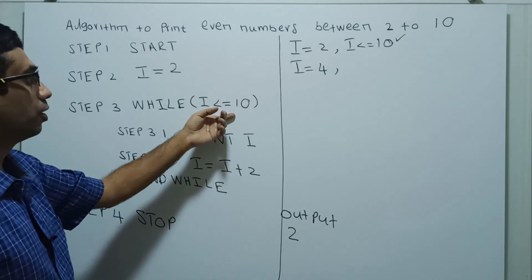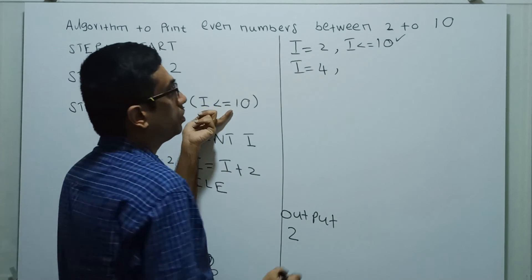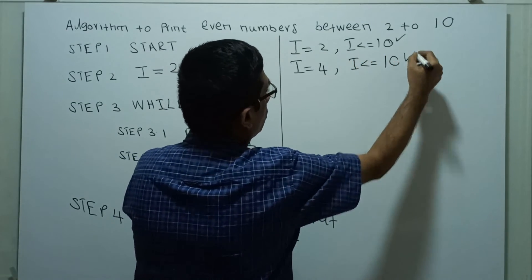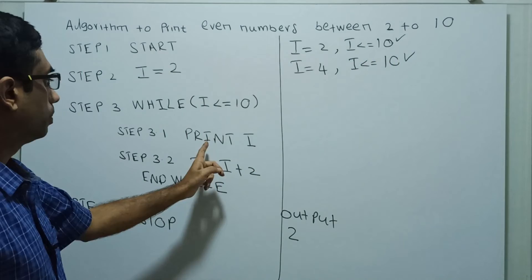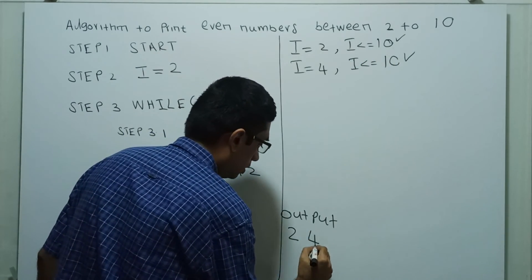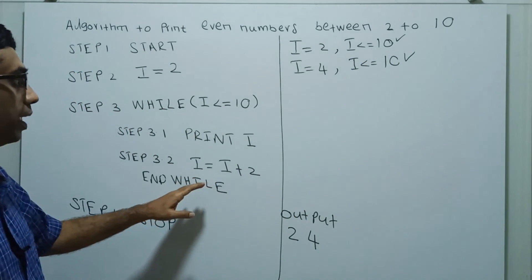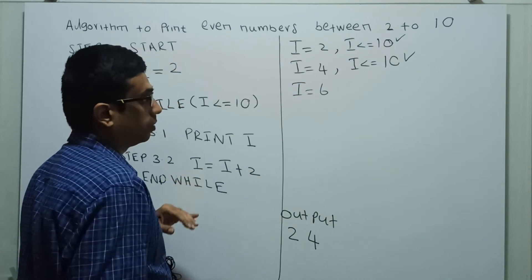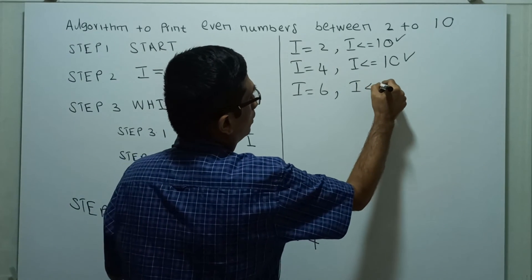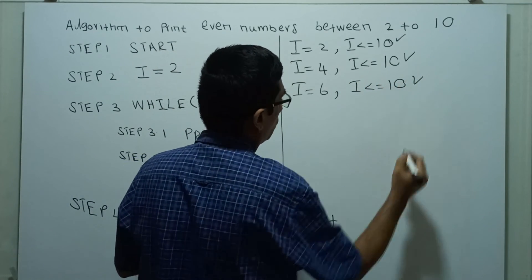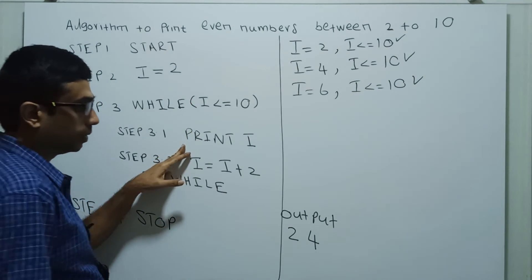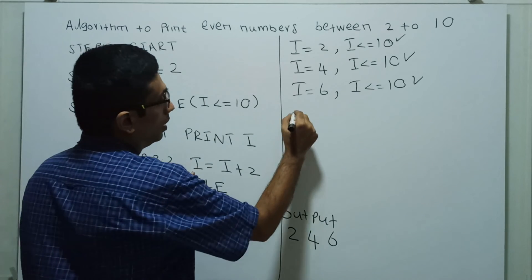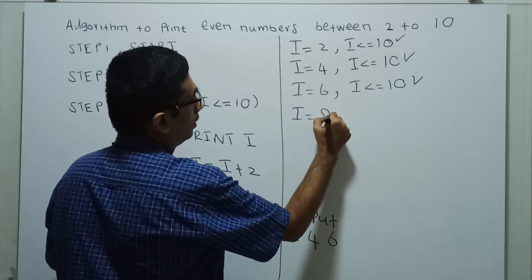I equal to 6 now. I less than or equal to 10 which is true. Then print I. I will get printed. I equal to I plus 2. I equal to 8 now.